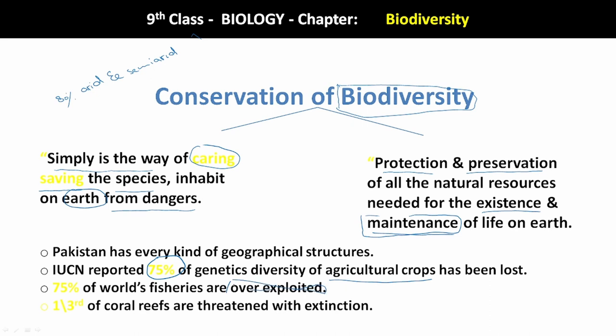Next: 75 percent of world fisheries are exploited — hum fisheries resources ko 75 percent exploit kar chuke hain. One third of marine coral reefs extinct kar chuke hain hum. Hum apni nature ki qadr nahi kar rahe. Zaroorat hai hum ise preserve karein, zaroorat hai is zameen ki baqa ke liye hum iske care karein.